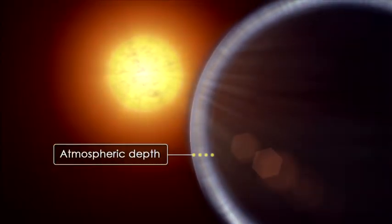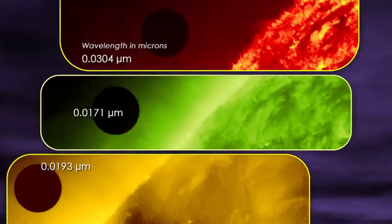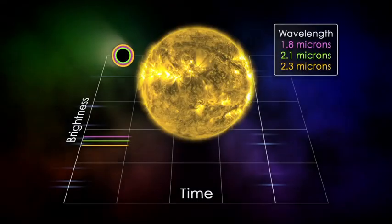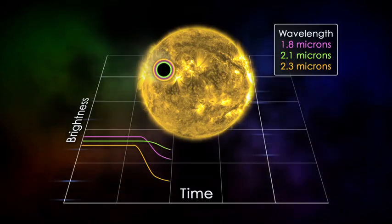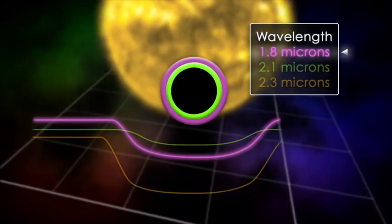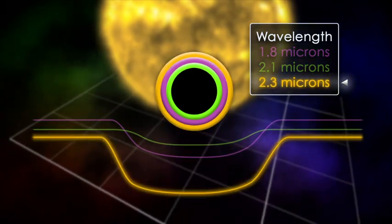Knowing the depth and density of the atmosphere is also important. To figure this out, astronomers observe the transit at many different wavelengths. At wavelengths where more absorption occurs, the planet will appear larger, with the change in size indicating how deeply the atmosphere extends and its density at different altitudes.